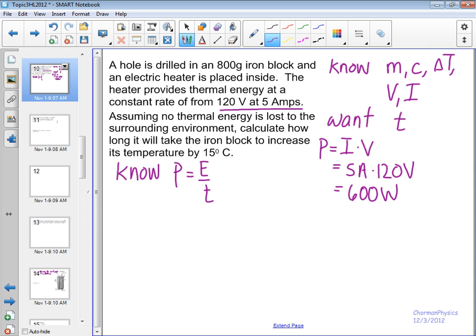So that's the amount of energy being delivered per time. Since we're assuming that no thermal energy is going to be lost to the surrounding environment, what we want to do is figure out how long it's going to take for the iron block to increase the temperature by 15 degrees Celsius. So we got the first part there.